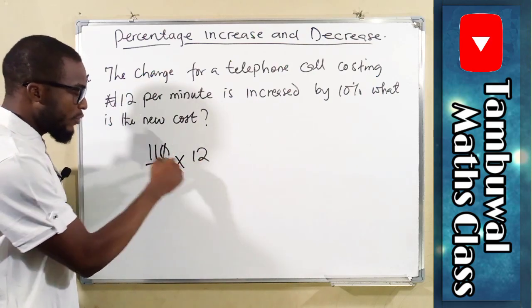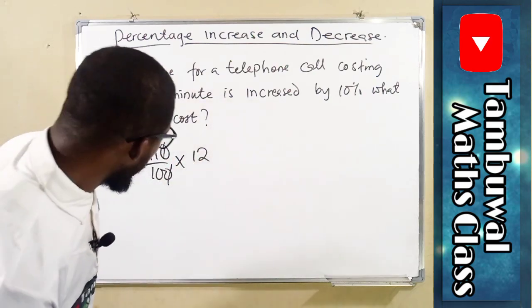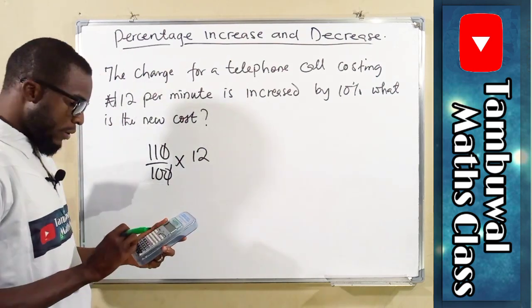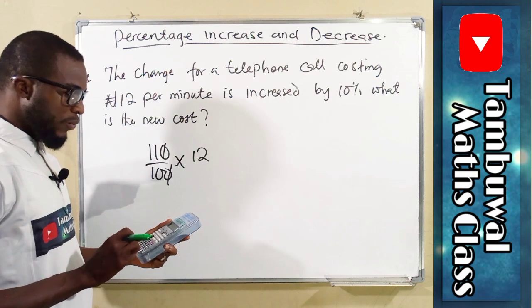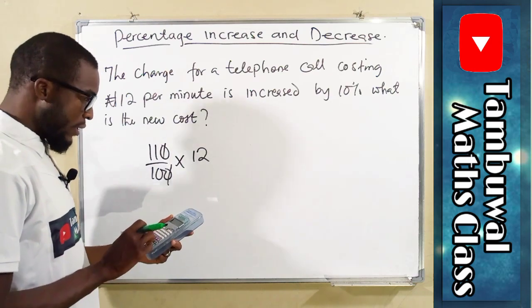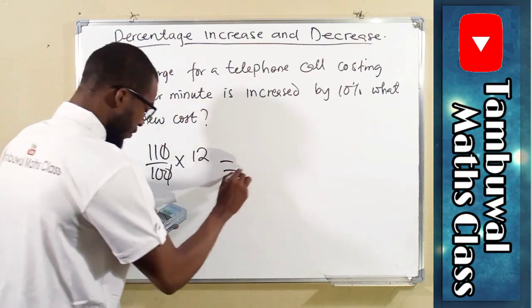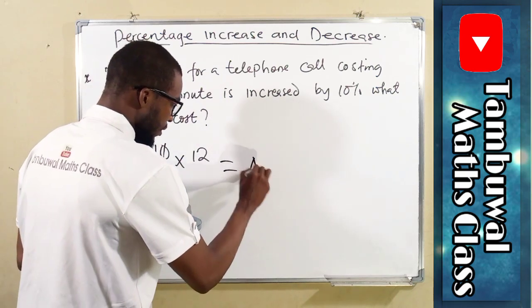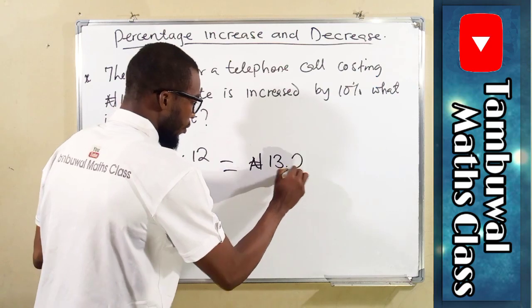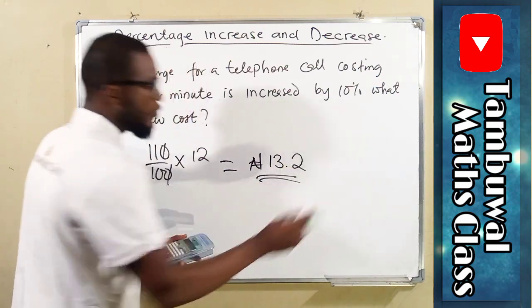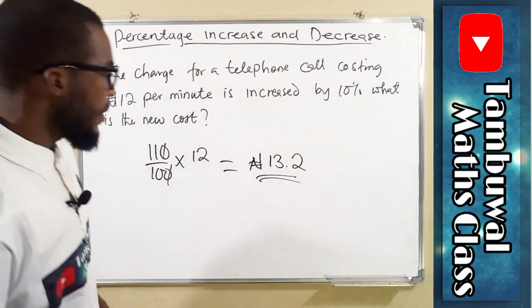All we have is 11 times 12 divided by 10. 11 times 12 is 132. Divide by 10 will give us 13 Naira, 20 kobo. So this is the new amount per minute.